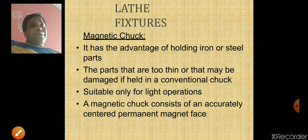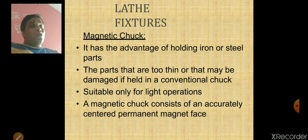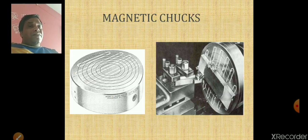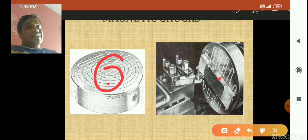We can also use a magnetic chuck for holding iron or steel parts in the lathe. Thin parts are very difficult to hold with clamping because the clamping force may damage them, so magnets are used. Here you can see the magnetic chuck — the magnet holds the workpiece by magnetic force so you can perform the cutting operation.